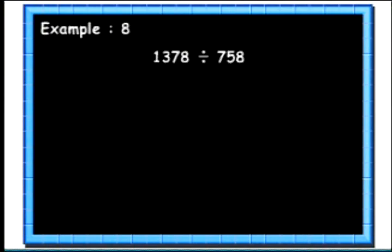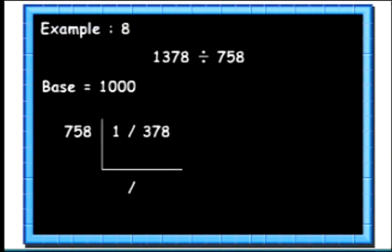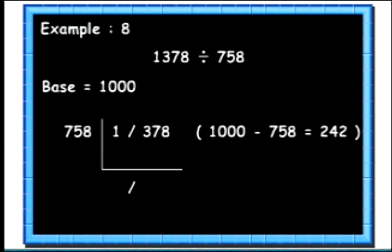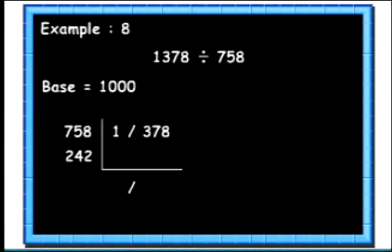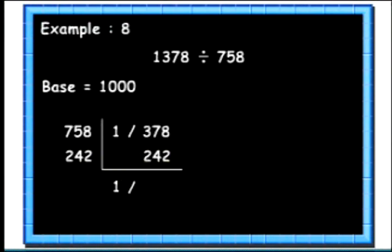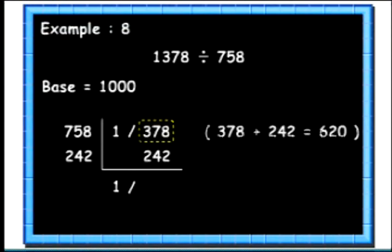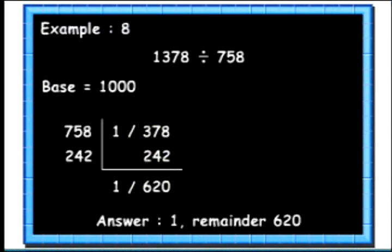Let's see another example. Here we will divide 1378 by 758. Again we will take the base as 1000. Since the base is 1000, we leave the last 3 digits in the dividend for the remainder stroke. Then we write 1000's complement of 758 below it. We bring down the first digit 1 and multiply it with the complement. We write the product below the next 3 digits. Finally we add up the last column to find the remainder: 378 plus 242 we get 620. So we get the quotient as 1 and remainder as 620.